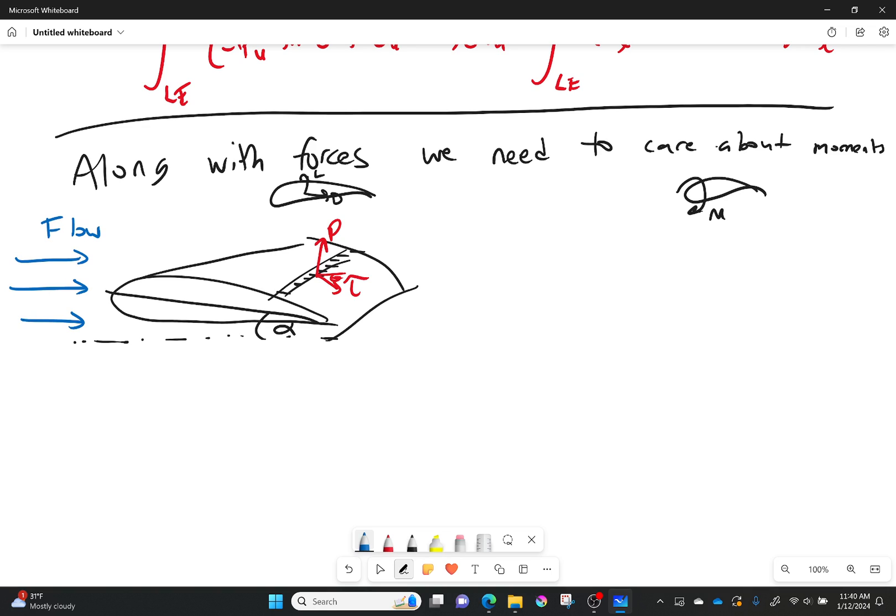But now what we're going to be talking about is our moment. So if I put my origin right here at the top surface, y and x, I will also have some moment spinning around that. We're calling this the leading edge moment, so I'm placing it at the leading edge.